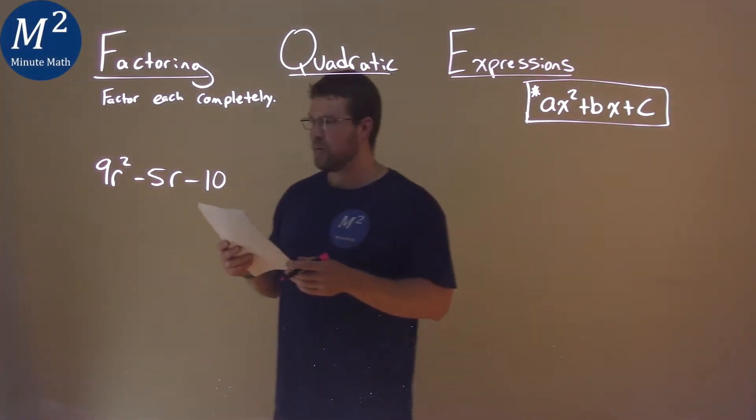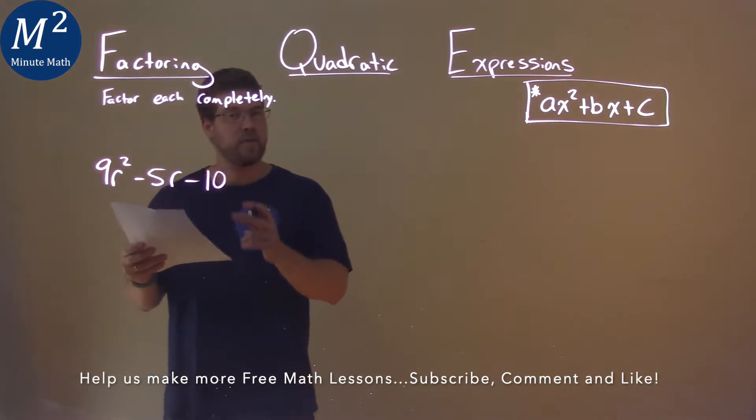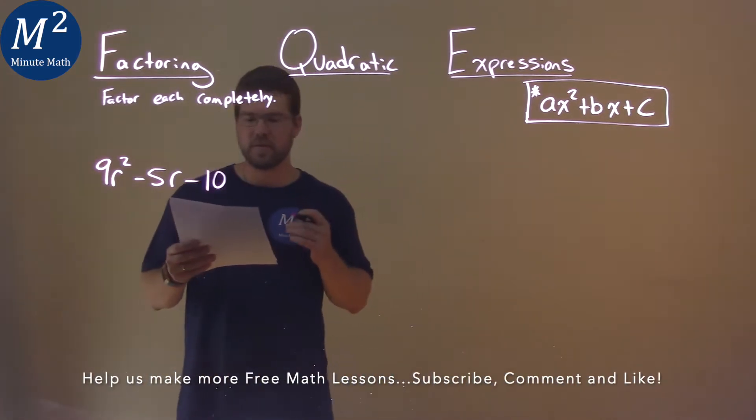We're given this problem right here: 9r² - 5r - 10, and we have to factor this completely.